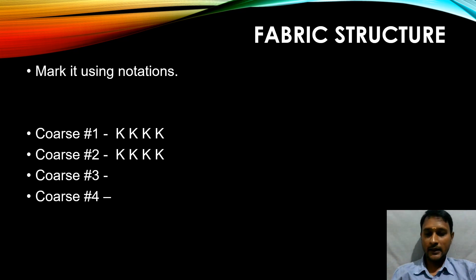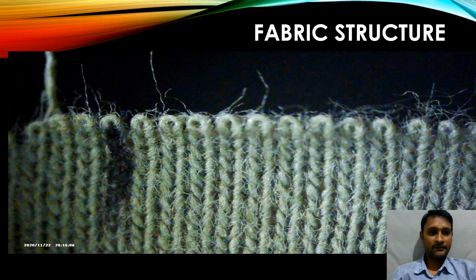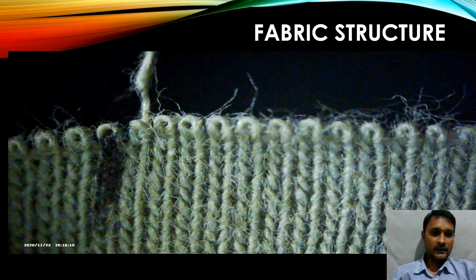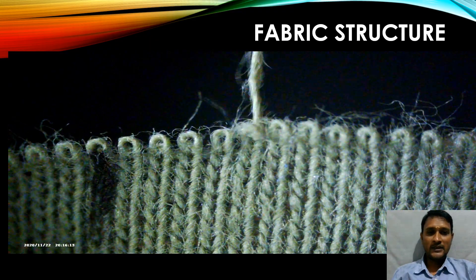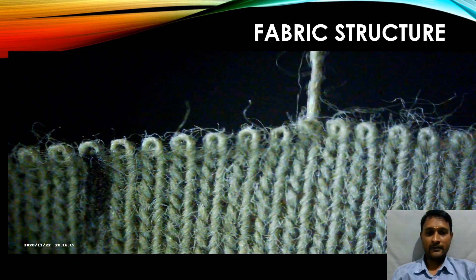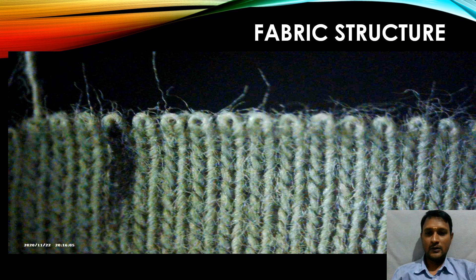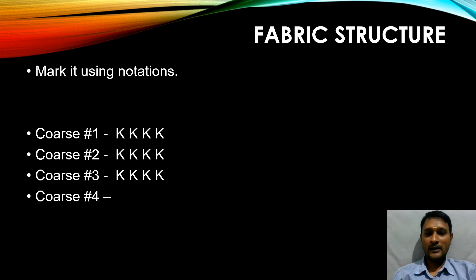Now we are going to unravel course number three. After the vertical line, we can see that only the knit loops are getting unraveled. We can mark course number three as well as K, K, K, K.